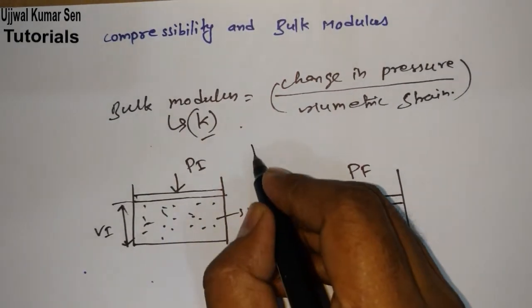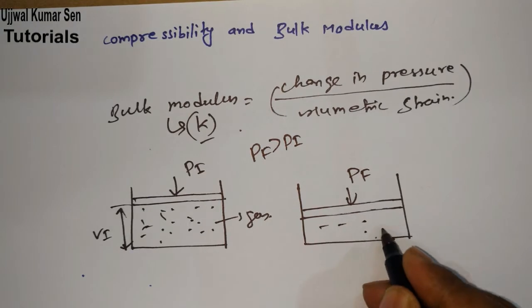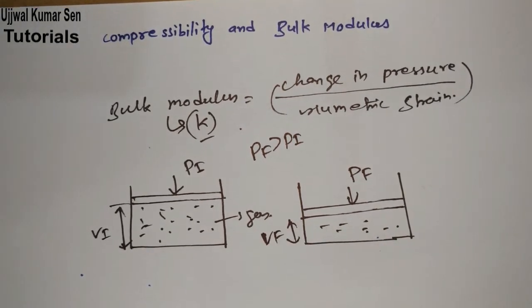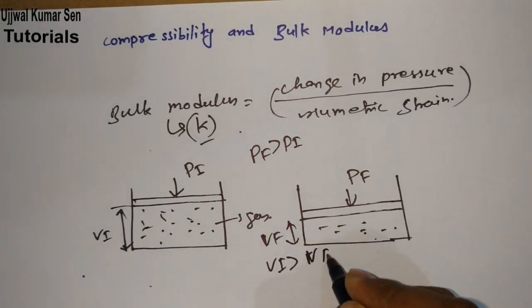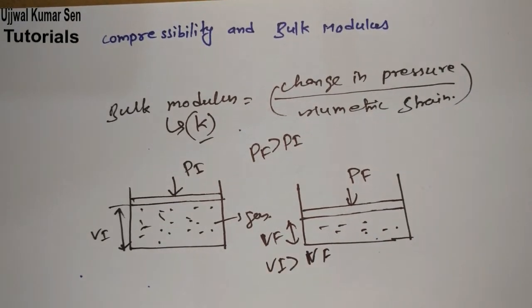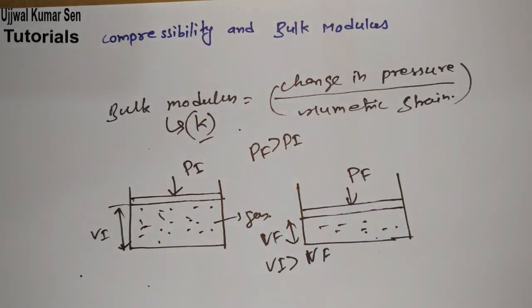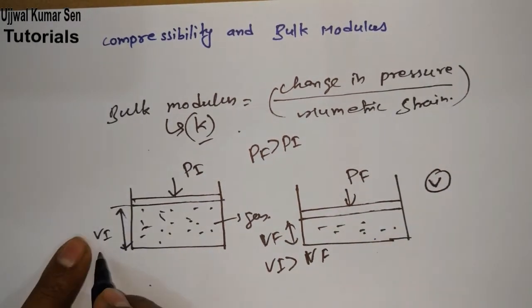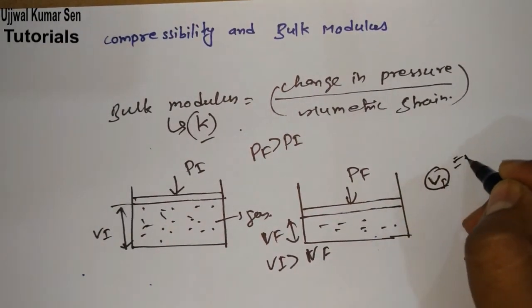From the equation we can say that Pf is greater than Pi. Now what volume? Volume is Vf. We can see here that Vi is greater than Vf. Now if we'll find out change in volume, because in case of volumetric strain we have to find change in volume upon original volume.